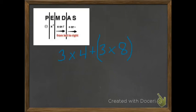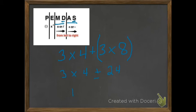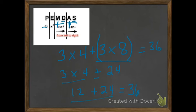This is a better visual. Division and multiplication are a team together, and addition and subtraction are a team together. I know I have to do what's in parentheses first: 3 times 8 is 24. So I rewrite my equation as 3 times 4 plus 24. Before I can add, I need to multiply: 3 times 4 is 12. So I have 12 plus 24, which is 36. I did my parentheses first, then my multiplication, then my addition.